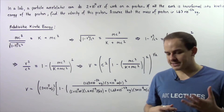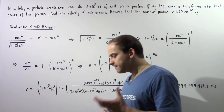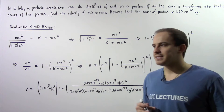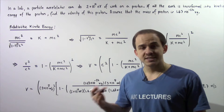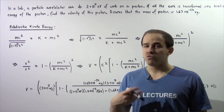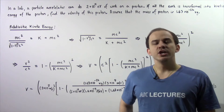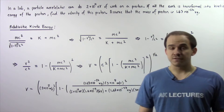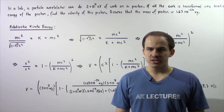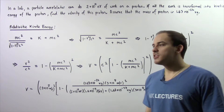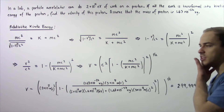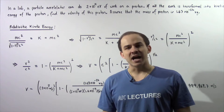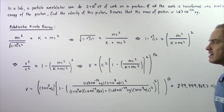Let's look at the following example that deals with relativistic kinetic energy. In a certain lab, a particle accelerator can do 2 times 10 to the 12 electron volts of work on a proton to accelerate that proton. If all that work is transformed into kinetic energy of that proton, we want to find the velocity of this proton, assuming that the mass of the proton is 1.67 times 10 to the negative 27 kilograms.